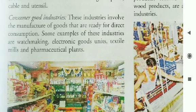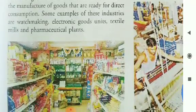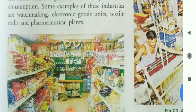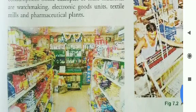Next, consumer goods industries involve the manufacture of goods that are ready for direct consumption. Some examples of these industries are watch-making, electronic goods units, textile mills, and pharmaceutical plants.